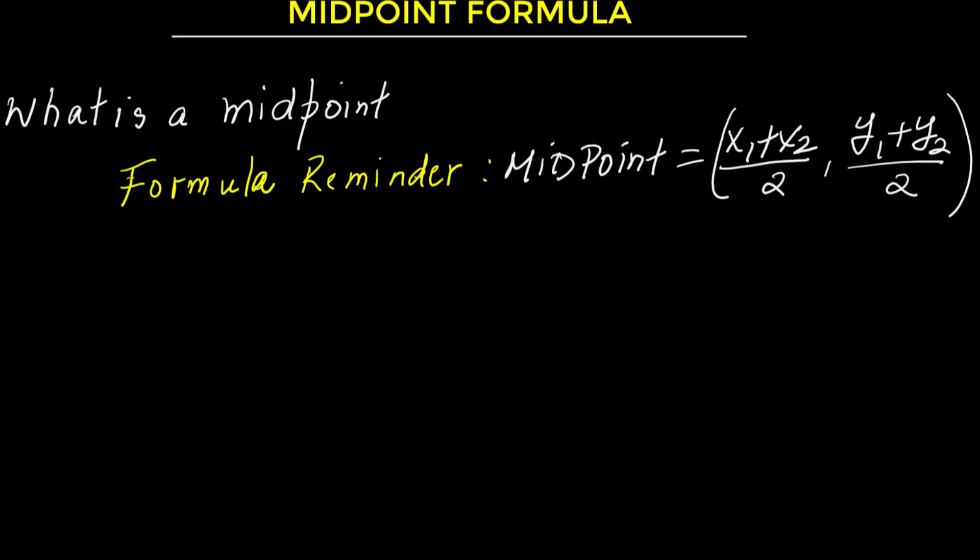A midpoint is the exact middle point between two locations on a coordinate plane. To find it, you take the average of the x values and the average of the y values. That means you add the two x values together and divide by 2, then do the same with the y values.